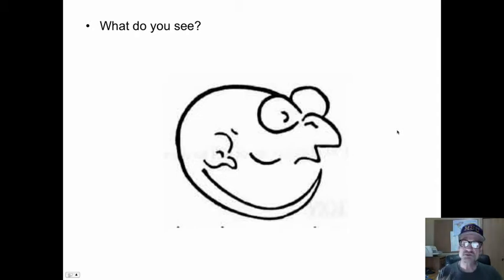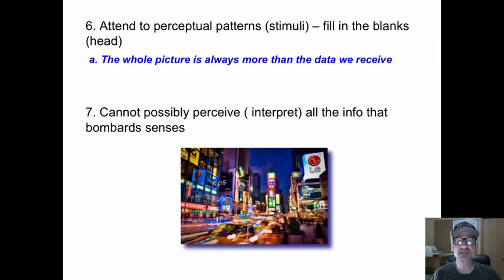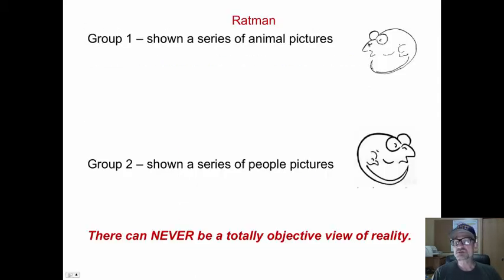Now, what do you see here? A little experiment. Group one was showing a series of animal pictures. Group two was showing a series of people pictures. The animal pictures saw a rat. Those who saw the people pictures saw the person, eyes, nose, etc. We impose an interpretation of reality based what is in our head.